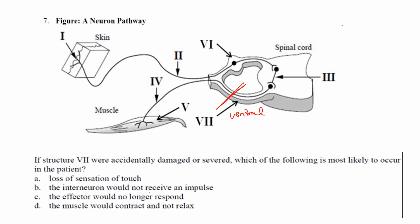In this case it says loss of sensations of touch. Let's go over the different options here. The interneuron would not receive the impulse. Well no, the interneuron right here would still receive the impulse because the sensory neuron and the dorsal, again this being the dorsal nerve tract, is still intact, so it's still going to receive the message. So that can't be true there.